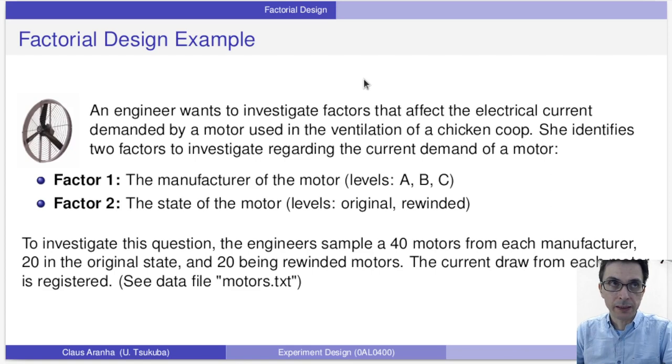Let's try to work this out through an example. Imagine that an engineer wants to investigate factors that affect the electrical current of a motor. So the engineer wants to buy new motors for a chicken coop, and they want to buy a motor that is reliable, that has low energy draw. So the engineer wants to investigate two factors regarding the electricity demand of the motor. Factor one is the manufacturer of the motor, and we imagine that there are three manufacturers under consideration: A, B, and C. And factor two is the state of the motor, original or rewinded.